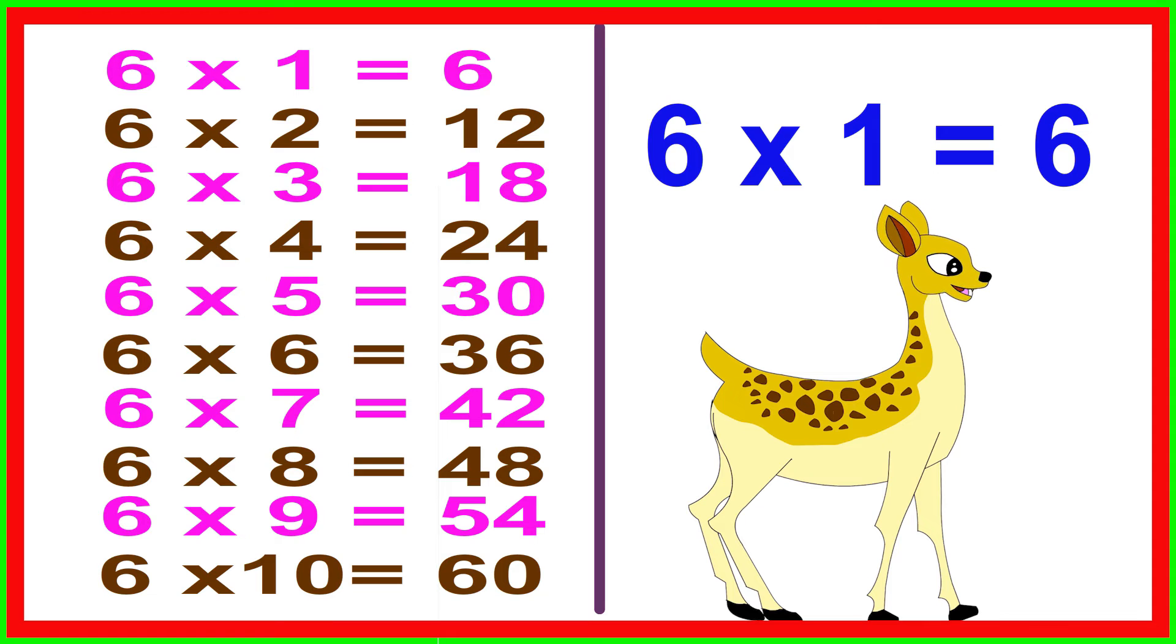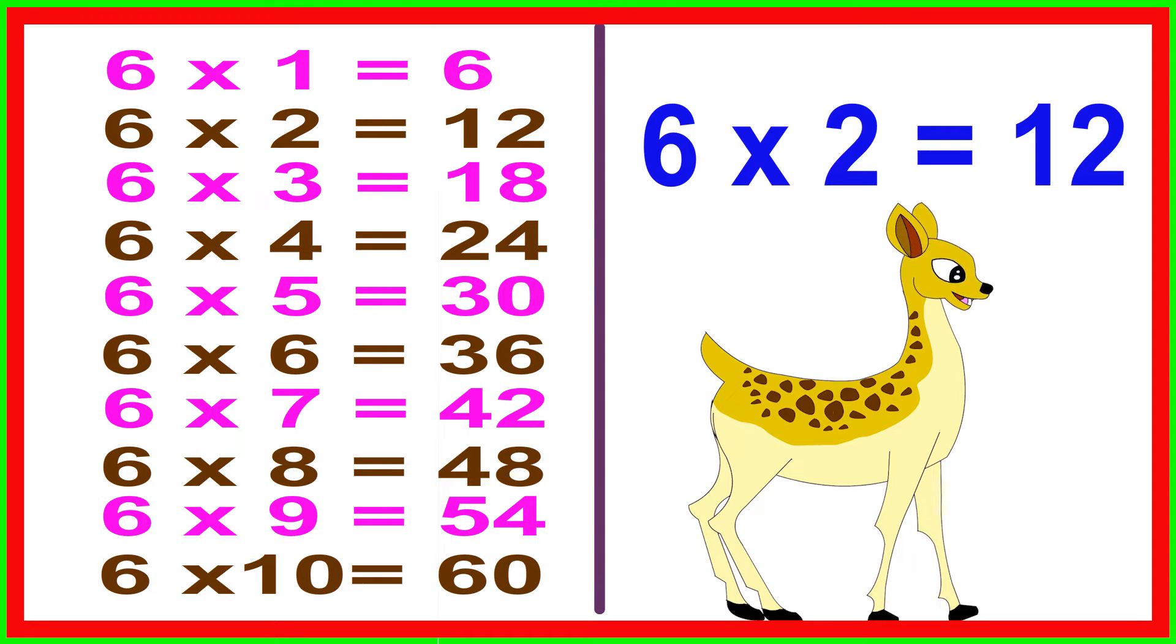6 times 1 equals 6, 6 times 2 equals 12, 6 times 3 equals 18, 6 times 4 equals 24, 6 times 5 equals 30.